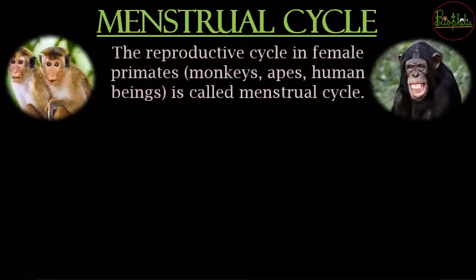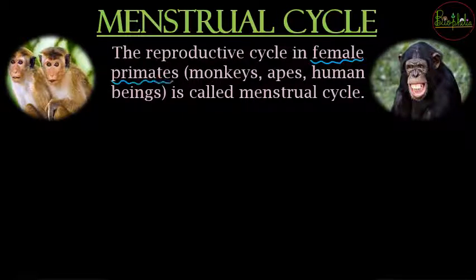So what is the menstrual cycle? It is a reproductive cycle that occurs in female primates. Examples of female primates include monkeys, apes, and humans, who follow the menstrual cycle.